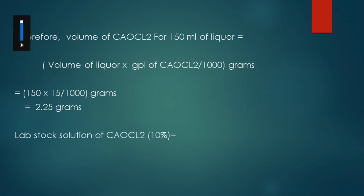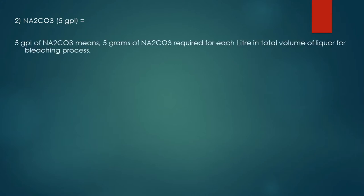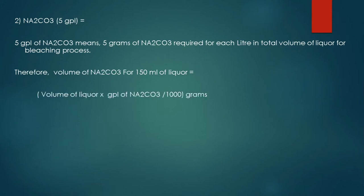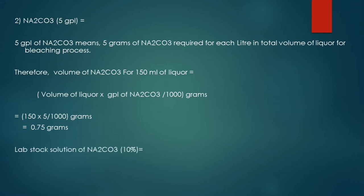We made a lab stock solution of 10% calcium hypochlorite, so we need to take 22.5 ml from the 10% stock solution. Next, for Na₂CO₃ at 5 GPL, that means 5 grams of Na₂CO₃ required per liter. Therefore, the volume of Na₂CO₃ for 150 ml of liquor = (150 × 5) / 1000 = 0.75 grams. Since the lab stock solution of Na₂CO₃ is 10%, we need to prepare 7.5 ml from the stock solution.